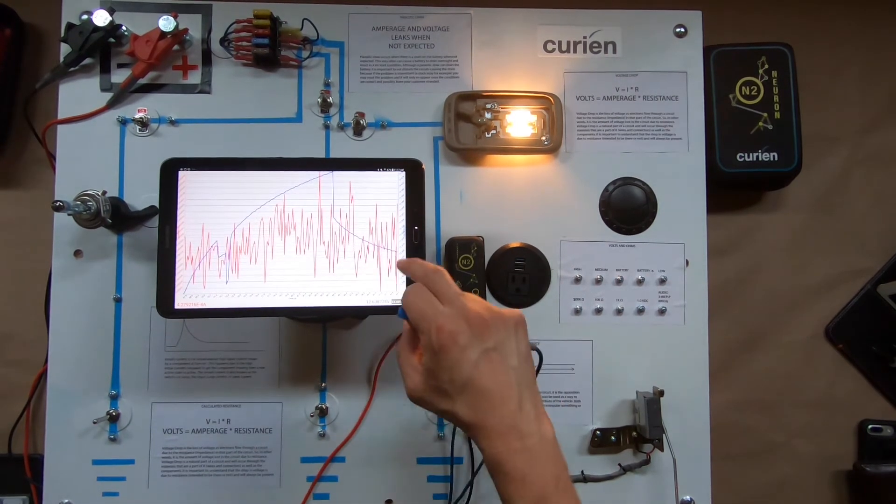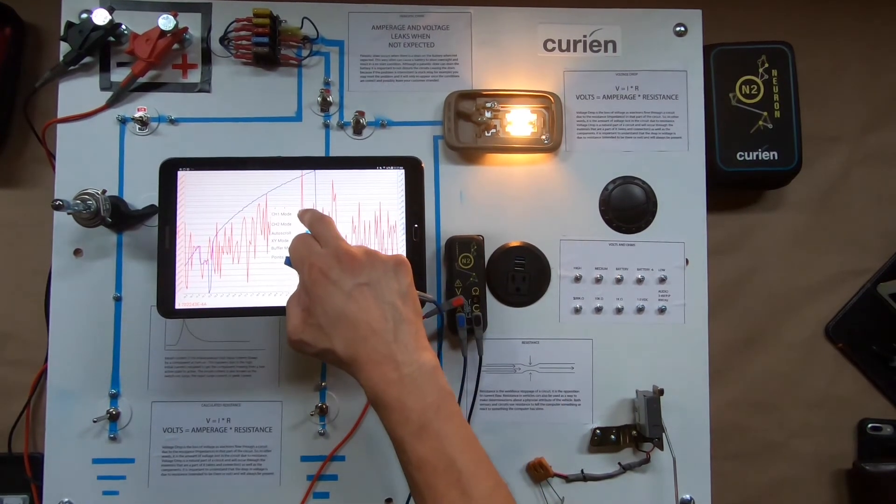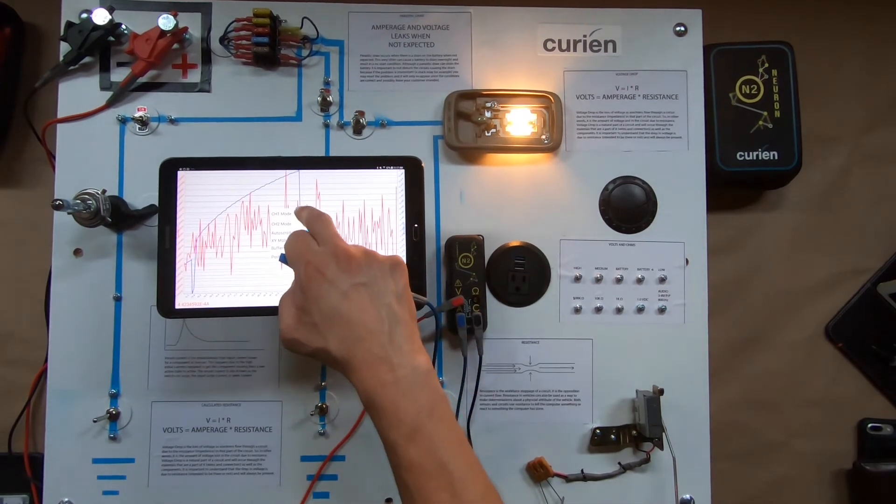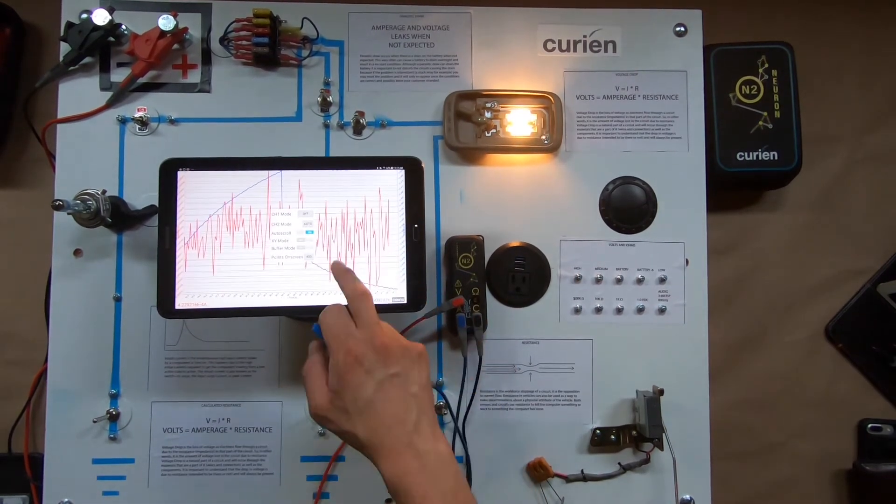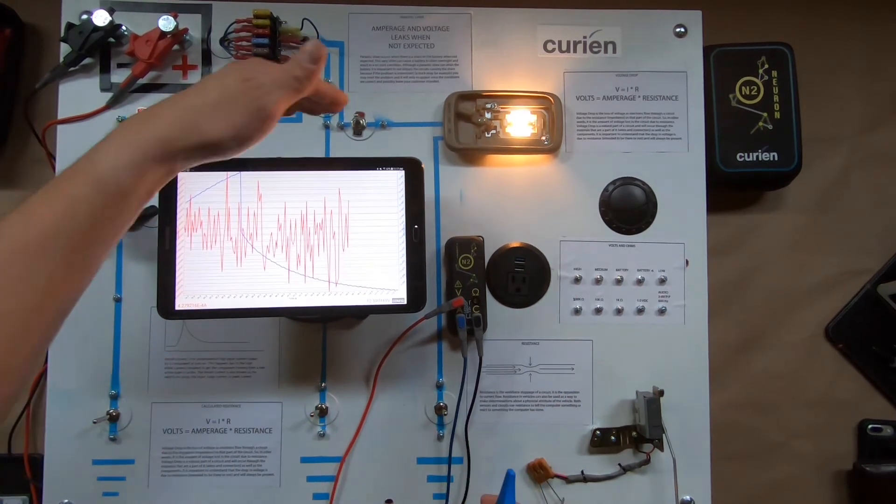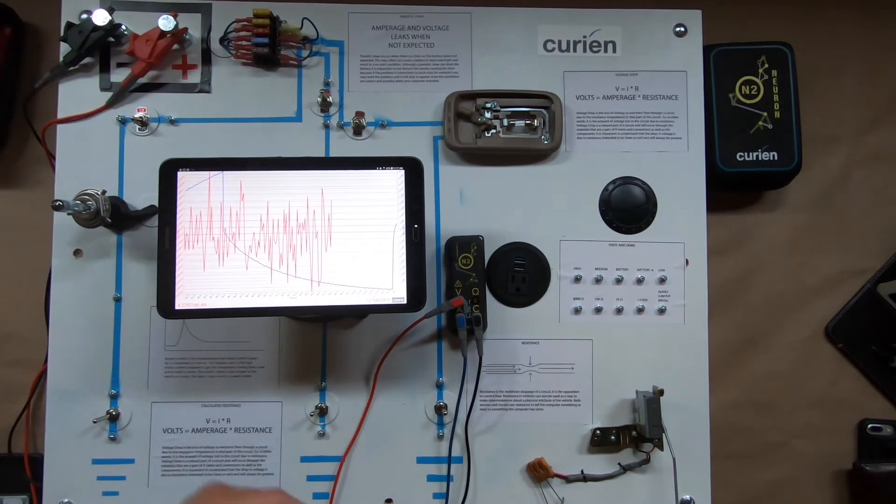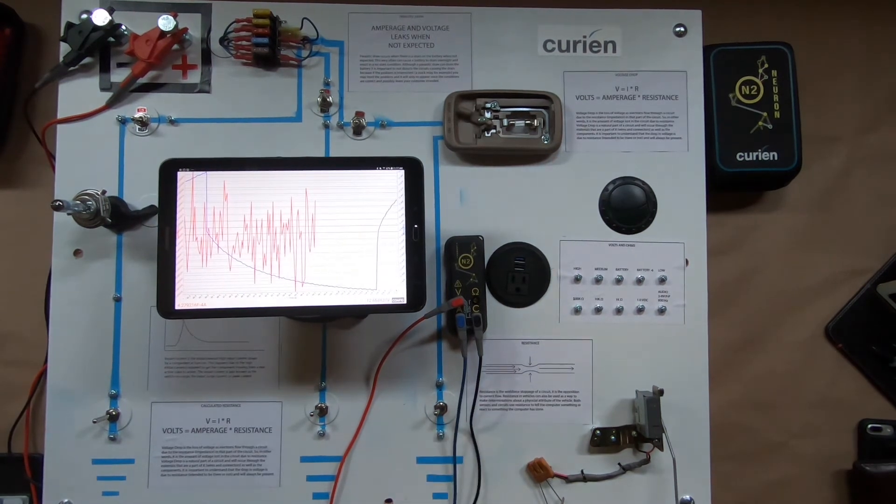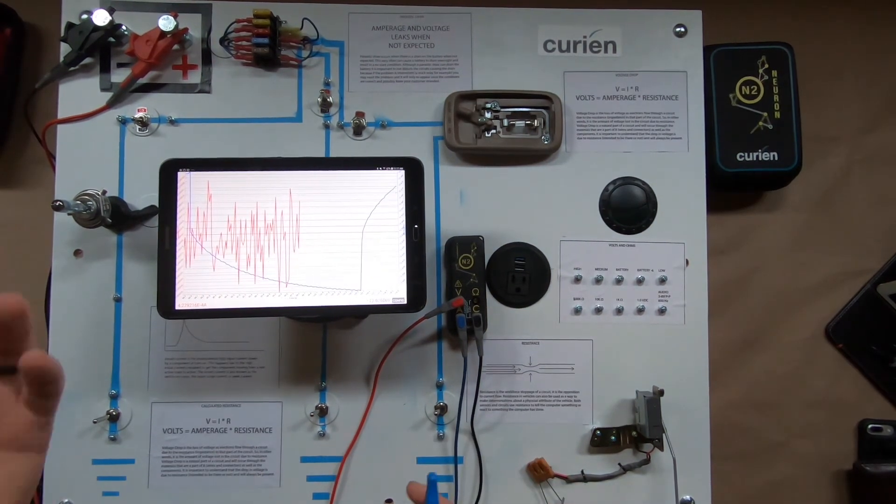So if all you're looking for is to determine whether or not something is pulling down on that battery for you, or whether or not you've got something going on with a component where it's drawing, you're able to see that there. And just to give you an example as to why that may be important, even though we're on the amperage testing, it is related.